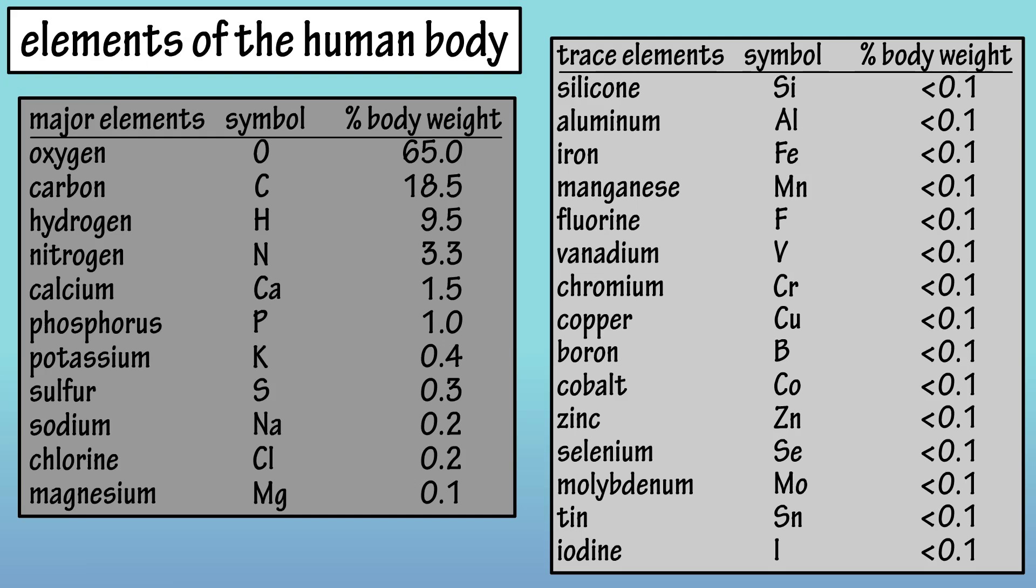The chart on the screen lists the major and trace elements in the body, along with their symbol, and the percentage of body weight of each of these elements.